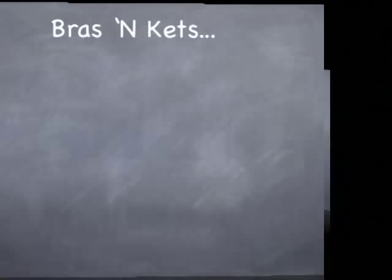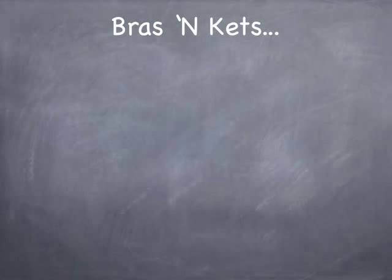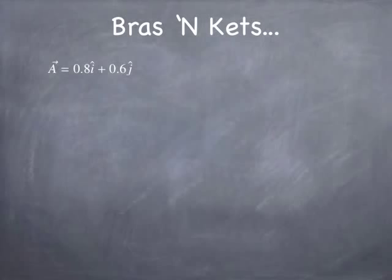Let's talk about bras and kets. I want to work out an example and get into the concept of projection, starting with conventional vectors. Let's imagine we have a conventional vector a — this one turns out to be a unit vector, which you can tell because if you square the components and add them together, you get 1. In i-hat, j-hat, k-hat notation, it would be 0.8 i-hat plus 0.6 j-hat. In direct notation, I write that as 0.8 ket i plus 0.6 ket j, where i and j are kets representing basis vectors in the Cartesian basis.